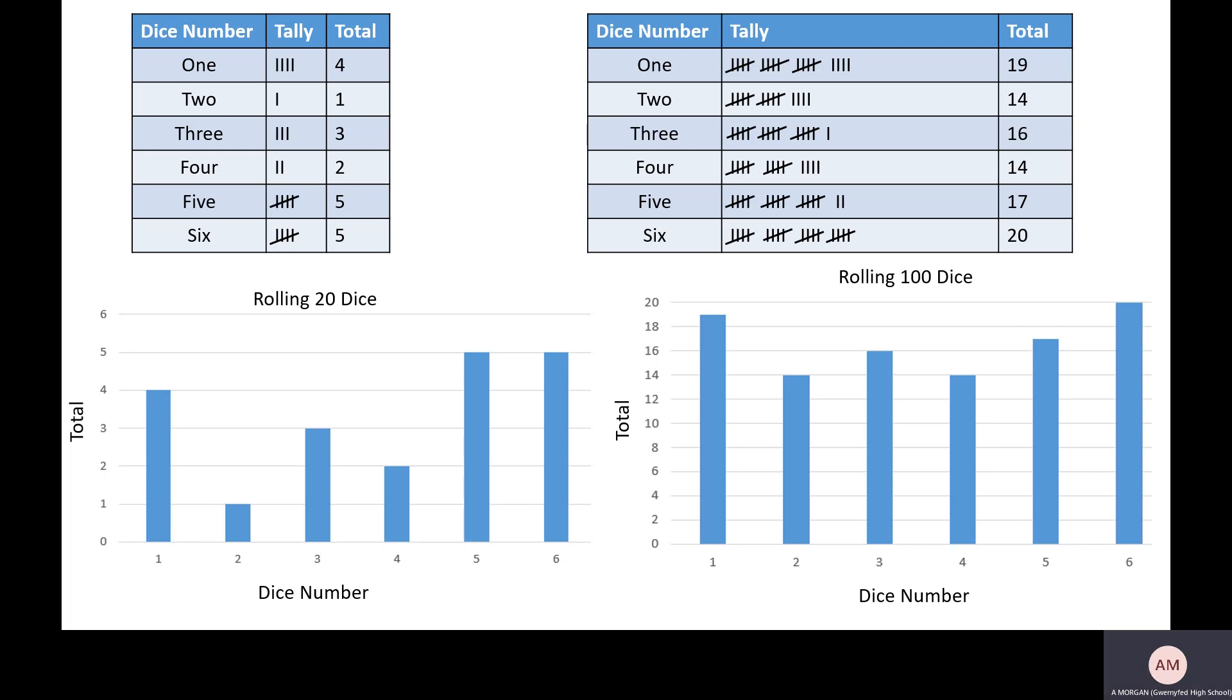And it'll start evening out for a couple of reasons. Reason one is the more times you do things, the closer you get to actual theoretical probability. Because if you do it just six times, it's foolish to assume you're going to get each number once each. But if you do it 6,000 times, it's more appropriate to expect you'll get around a thousand times each.